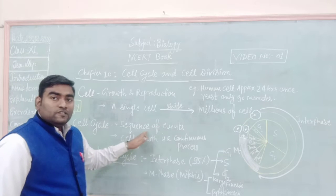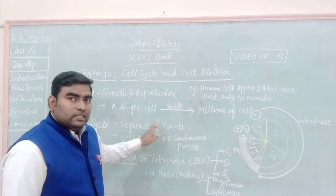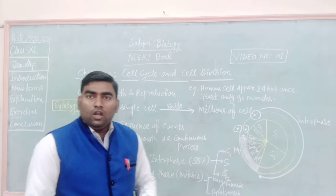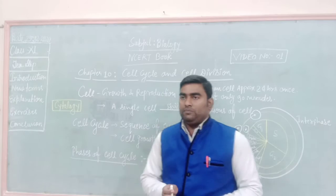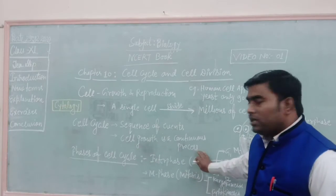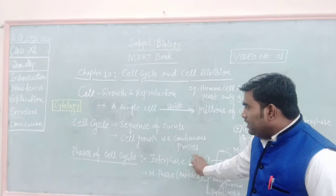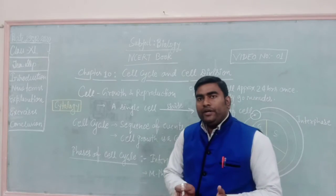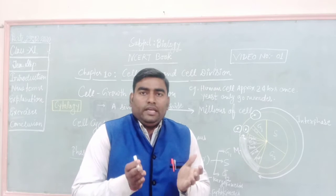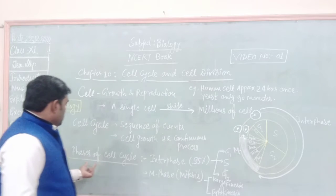Cell cycle is the sequence of events. Cell cycle is the sequence of events where a lot of things take place. In the cell cycle, cell growth is a continuous process in which cell gets divided, multiplied, and forms two daughter cells.